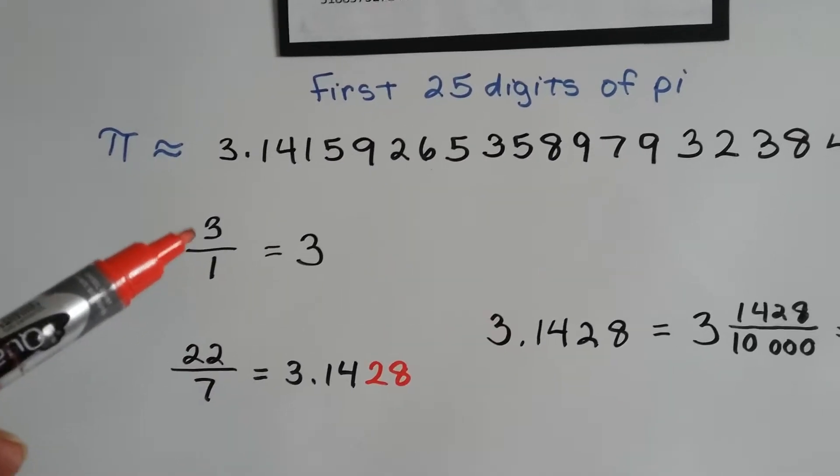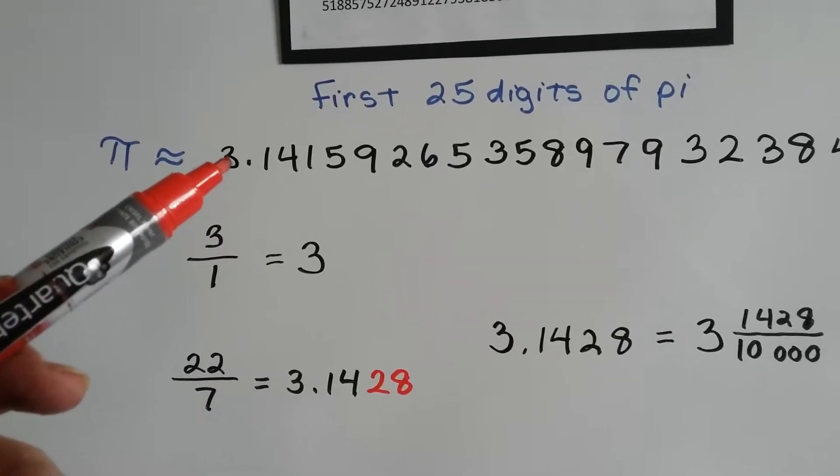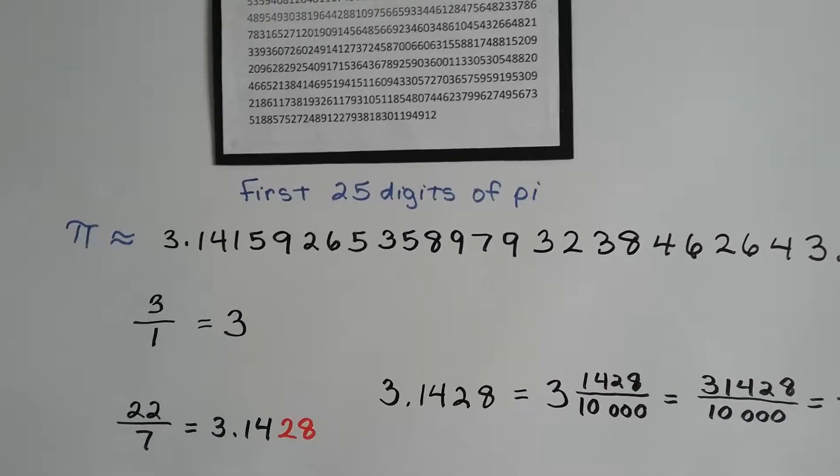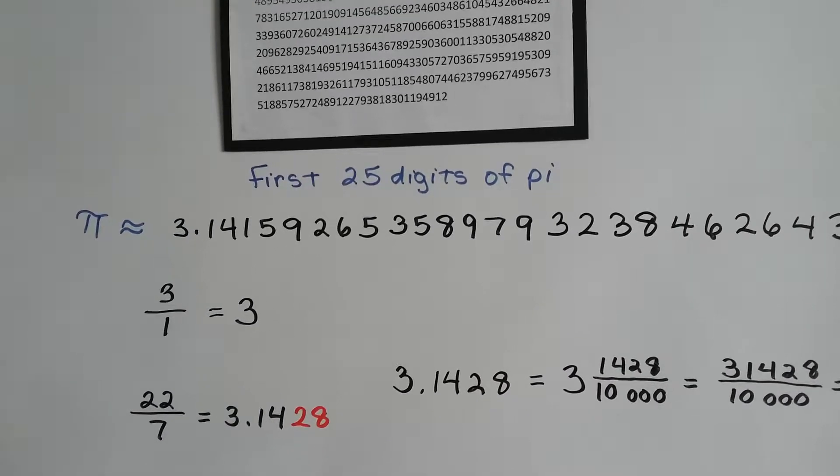So, that would be a fraction, wouldn't it? But we need it to be 3.1415926, it needs to go on and on and on. So, how do we write that as a fraction?